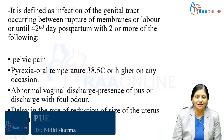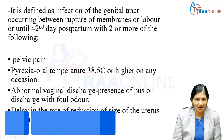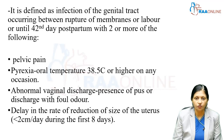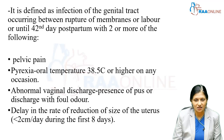Puerperal sepsis is defined as infection of the genital tract occurring between the rupture of membranes or labor until the 42nd day postpartum, with two of the following: pelvic pain, pyrexia with oral temperature 38.5 degrees Celsius or higher on any occasion, abnormal vaginal discharge, or presence of pus or discharge with foul odor.